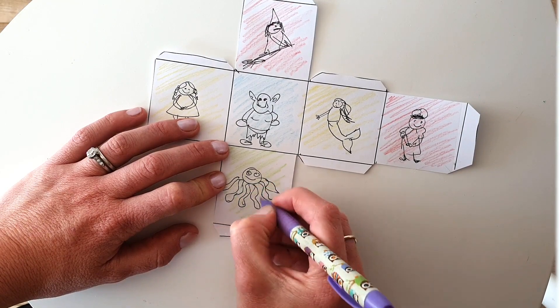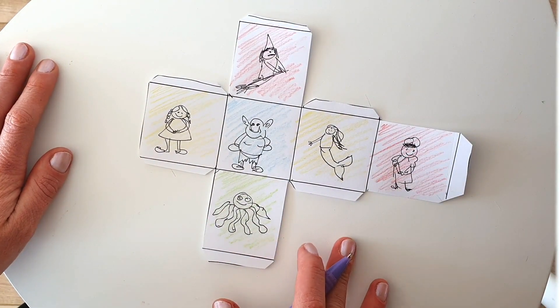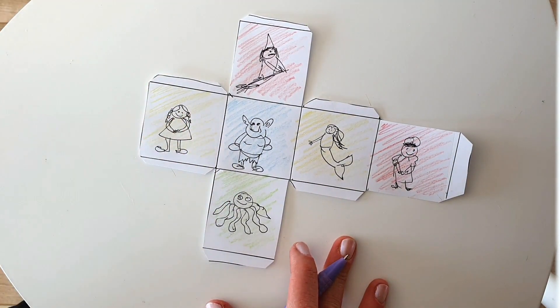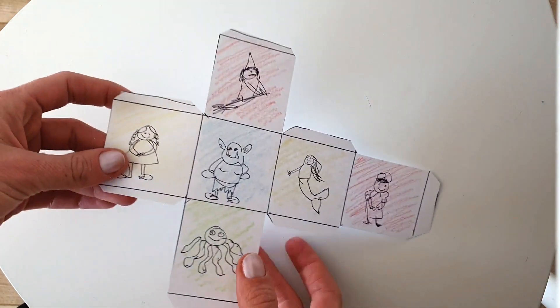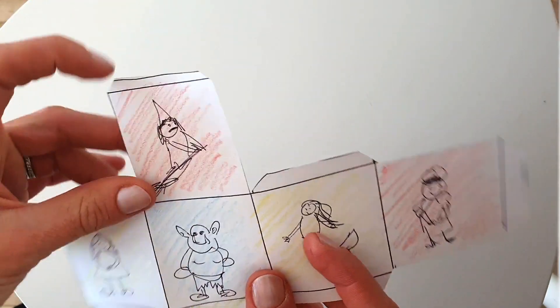Okay, so then you've got your people cubes. Then you're going to - the second one's going to do the places, and then the third one will be objects. I'll show you that in a minute. But to finish this off, once they've colored it in and done the pictures, you're going to help them with just folding it into the cube shape.